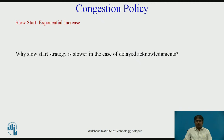However, the slow start strategy is slower in the case of delayed acknowledgements. For each ACK, the congestion window is increased by only 1 MSS. Hence, if 3 segments are acknowledged cumulatively, the size of the congestion window increases by only 1 MSS, not 3 MSS. The growth is still exponential, but it is not a power of 2. With 1 ACK for every 2 segments, the power is closer to 1.5.